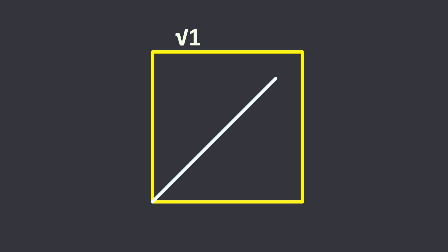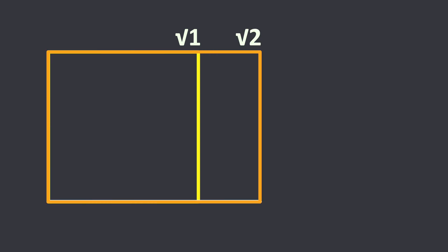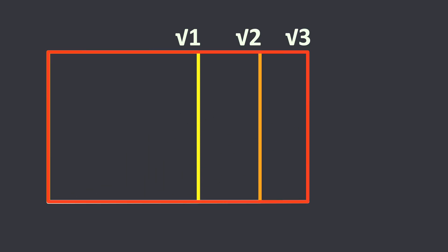Starting, of course, with a square, which is a root 1. If you take a square's diagonal and drop it down, you have a root 2. Take that, drop it down, a root 3, and so on.